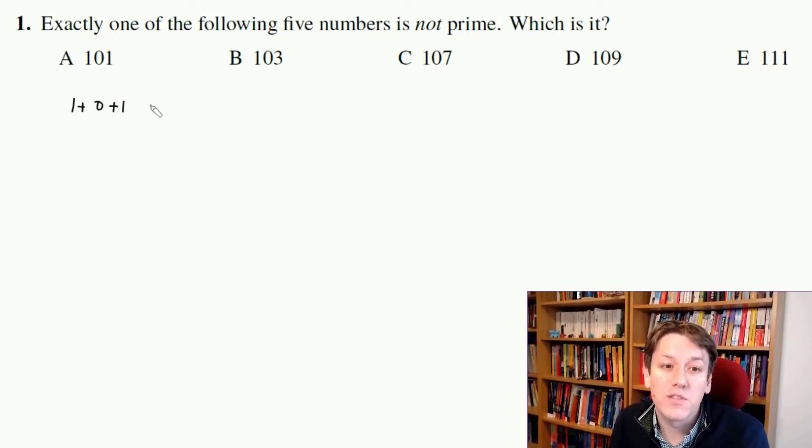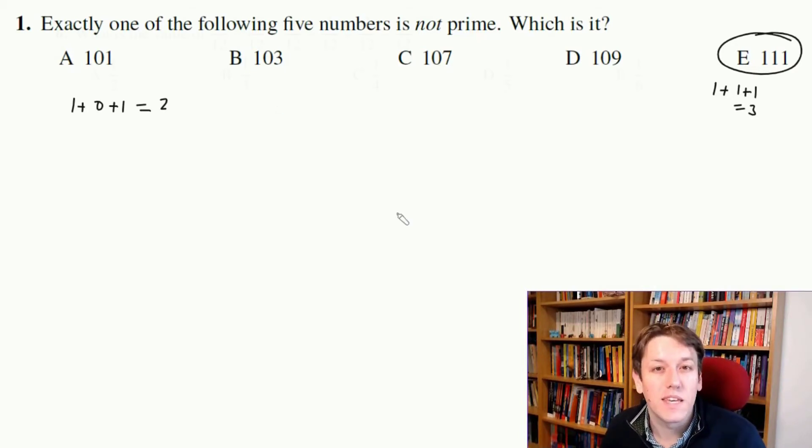And you can check that for all the others, 1 plus 0 plus 3 is 4, etc. And you'll see if you look at E, 1 plus 1 plus 1 is 3, and so we know actually that one is a multiple of 3, and this is the one that isn't prime. If we hadn't found a multiple of 3, I'd have also had to check for 7. But we found the one that isn't prime, and so that's the answer, E.